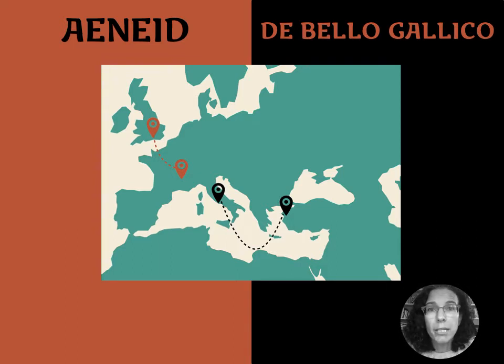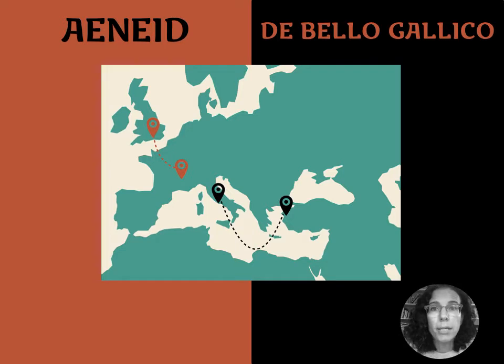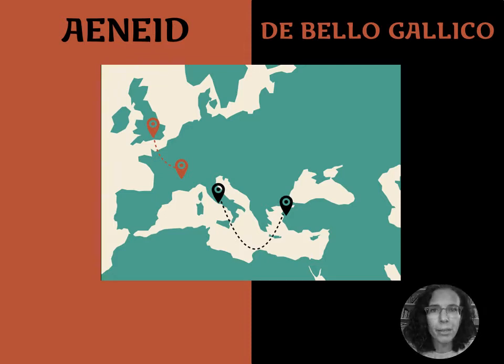Virgil's Aeneid takes place in Troy, Carthage, and eventually in Italy, whereas the Gallic Wars, as the name suggests, take place in Gaul with a short foray over into Britain.